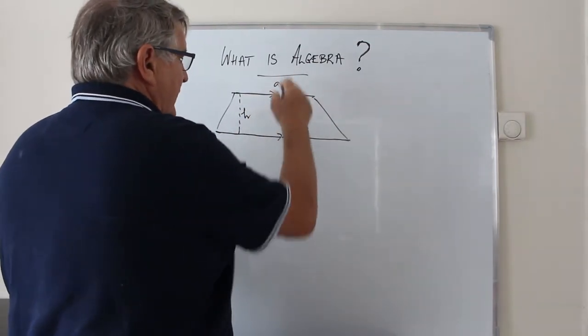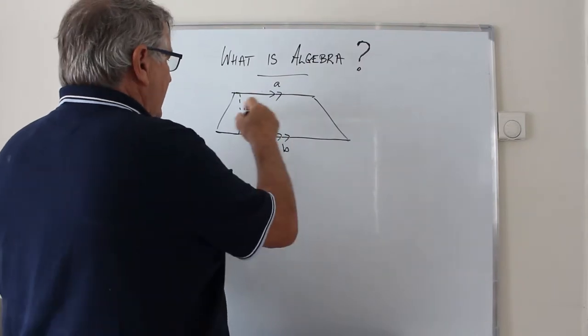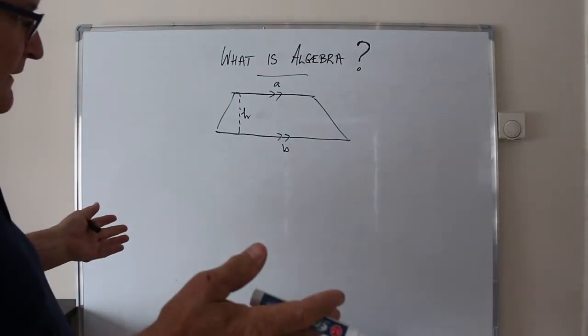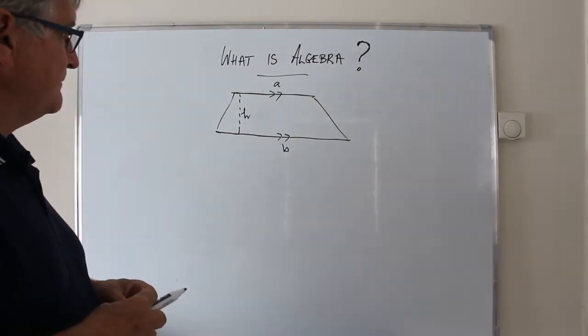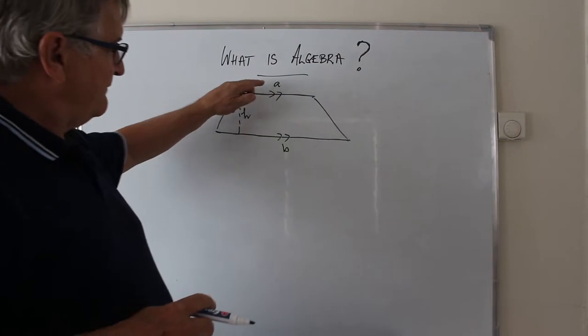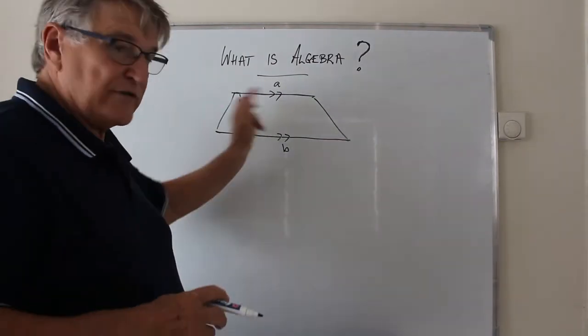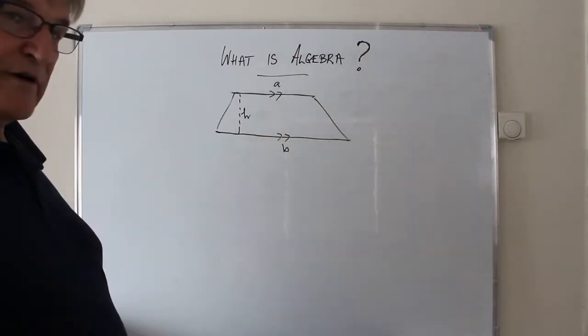The lengths of the parallel sides are a and b and the height is h. Now, if I'm going to explain in words how to find the area of this trapezium, I'd be saying it's half the sum of the lengths of the parallel sides multiplied by the height.